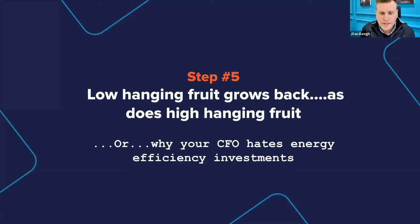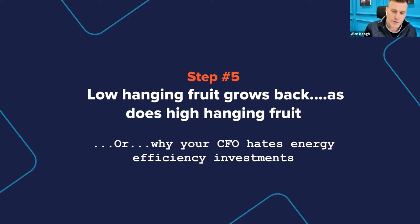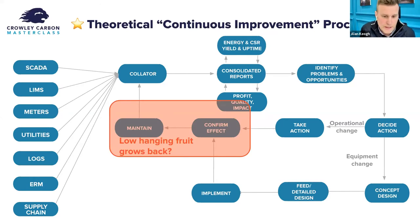Step five, the final step, is making sure all that value and change is sustained. Low-hanging fruit tends to grow back — and so does high-hanging fruit. If you've put in a heat recovery loop, it can get fouled and bypassed, and then it's not doing anything. The question is: why does your CFO hate energy efficiency investments? Energy efficiency is more difficult than solar — putting solar panels on a roof is non-intrusive and once the sun shines you get the savings. Whereas energy efficiency means taking the plant apart and putting it back together in a more optimum way, which is intrusive. And the savings that accrue can be dependent on weather or production. So how do you make sure that low-hanging fruit does not grow back? How do you confirm the effect in the first place, and then sustain it over the long term?